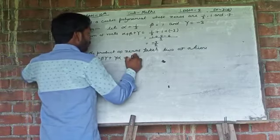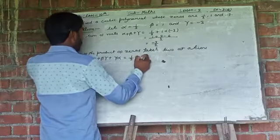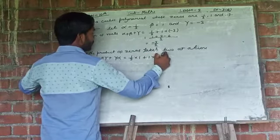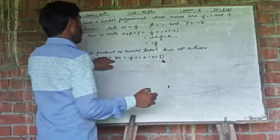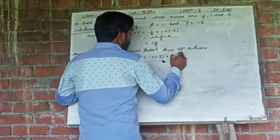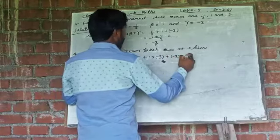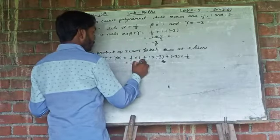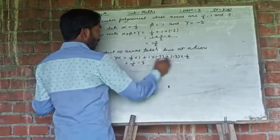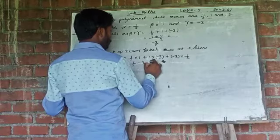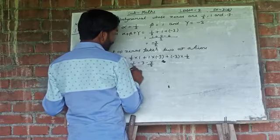Alpha beta where is alpha 1 by 2 into beta 1. Again plus 1 into gamma minus 3. Here gamma alpha, so plus minus 3 into alpha, it is 1 by 2. From here we will get 1 by 2 minus 3 and from here minus 3 by 2, minus 3 by 2.